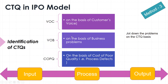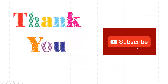The third method involves identifying CTQs — Critical to Quality characteristics. CTQs can come from VOC (Voice of Customer), VOB (Voice of Business), and COPQ (Cost of Poor Quality). VOC comes from customer feedback, VOB comes from top management on business priorities, and COPQ relates to defects and quality costs. You jot down all the problems as CTQs, then describe them in an input-process-output model. This is the formal and commonly used approach.